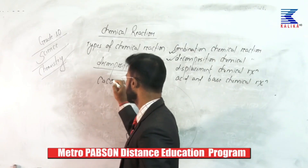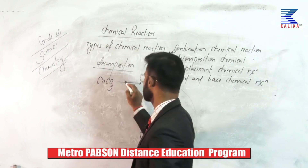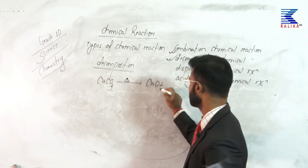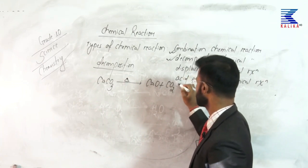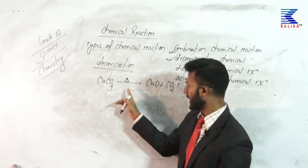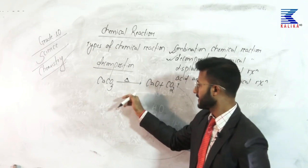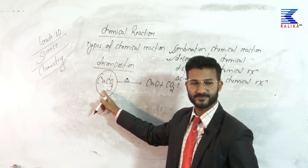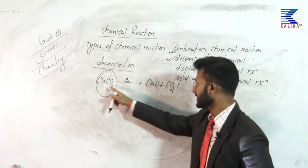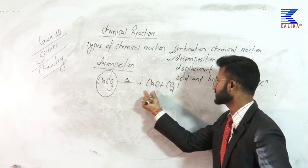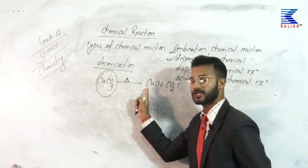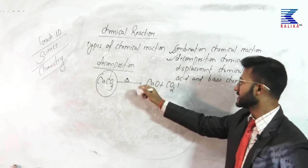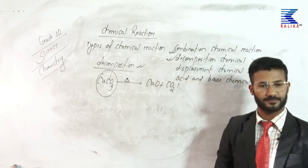Calcium carbonate is decomposed by heating. It forms calcium oxide plus carbon dioxide gas. Here, the reactant molecule is heated and it breaks down into two different types of product molecules — meaning decomposition has occurred. So this is a decomposition type of chemical reaction.